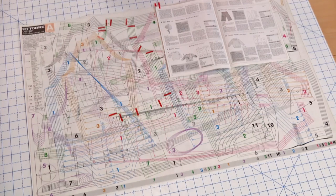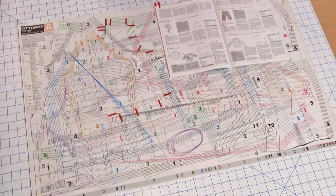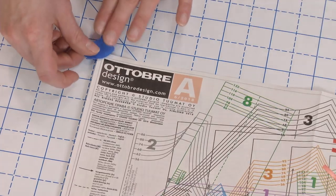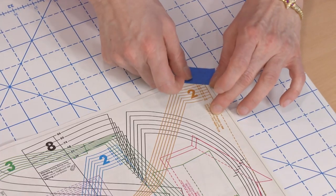Press the pattern sheet flat with a dry iron set on a medium setting. Clear a large work surface and tape the pattern sheet right side up to the table with painter's tape.